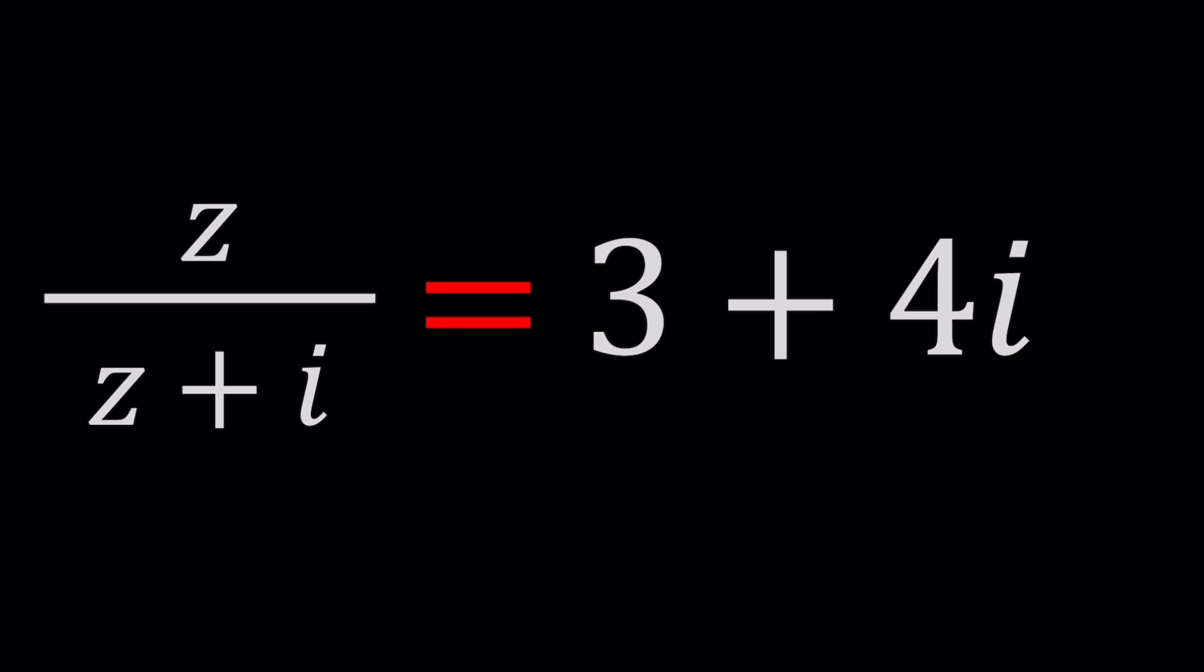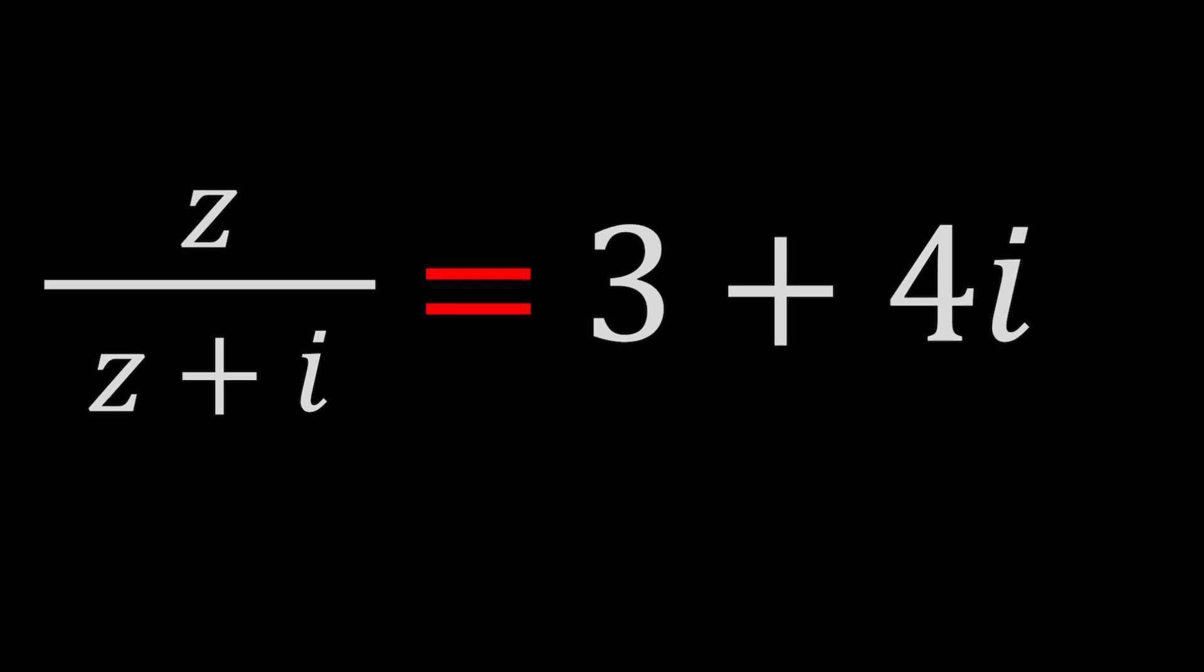So we have z divided by z plus i equals 3 plus 4i. You know, in some cases we don't have solutions. You can check them out. I was initially planning to present two solutions but then I thought about a third alternative. Let me just talk about it. Let's start with the first method.